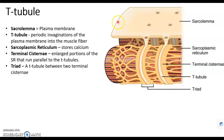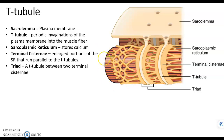So when the action potential travels along the sarcolemma, it enters these T-tubules, or transverse tubules. The action potential, which is electrical energy, is actually flowing along and around these myofibrils. And in the myofibrils we can see the actin and myosins overlapping in there.